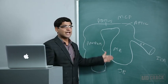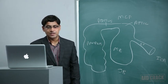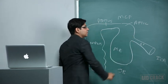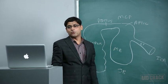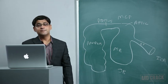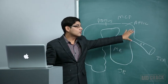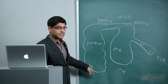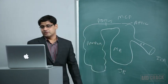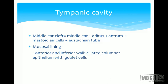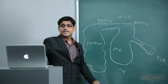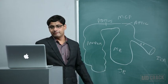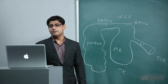The middle ear cleft includes the middle ear, the aditus, the antrum, the mastoid air cells, and the eustachian tube. The mucosal lining varies: the anterior and inferior walls are lined by ciliated columnar epithelium with goblet cells; the floor is lined by cuboidal cells with loss of cilia; and the attic and antrum are lined by pavement epithelium. Importantly, squamous epithelium is not normally present anywhere in the middle ear cavity - this is relevant when studying cholesteatoma.